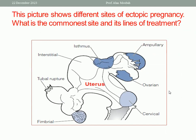This picture shows different sites of ectopic pregnancy. What is the commonest site and its lines of treatment? There are different sites of ectopic, like ampullary, isthmus, interstitial, fimbrial, ovarian, cervical, and so on. The commonest site is the ampullary portion of the fallopian tube — more than 70% of cases. So the ampullary part of the fallopian tube is the commonest.